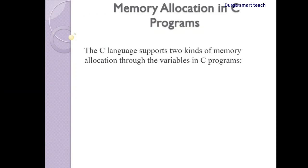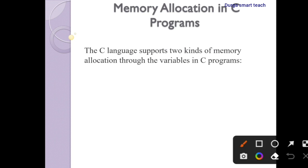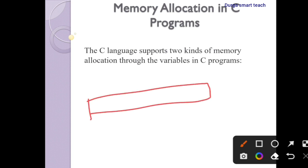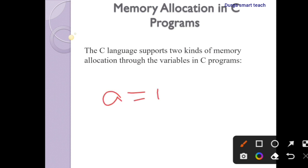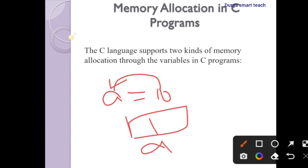Hello students, welcome to my channel. Today I am going to discuss memory allocation in C programs. The C language supports two kinds of memory allocation. Memory allocation means allocating memory for variables, files, or data. Variables are used to store values, and this value is stored in the variable at the memory location.